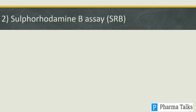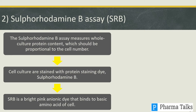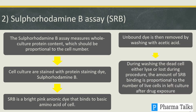The SRB assay measures whole culture protein content, which is proportional to the cell number. Cell cultures are stained with the protein-staining dye Sulforhodamine B (SRB), a bright pink anionic dye that binds to basic amino acids of cells. Unbound dye is removed by washing with acetic acid, during which dead cells lyse or are lost. The amount of SRB binding is proportional to the number of live cells remaining after drug exposure.